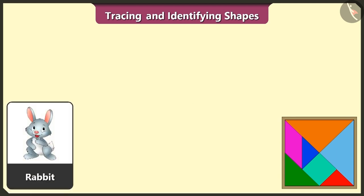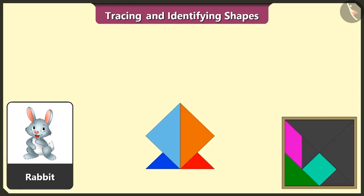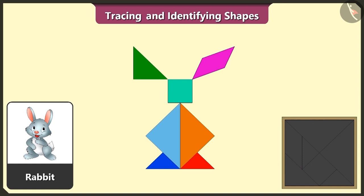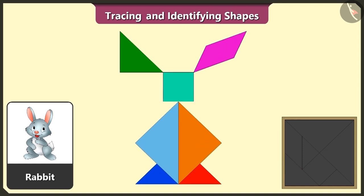This is a rabbit. Now we will try to create a rabbit using four triangles, one square, one more triangle, and one quadrilateral. See, the rabbit is ready.